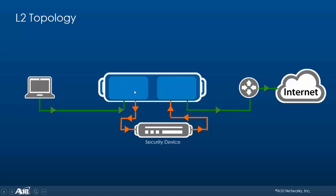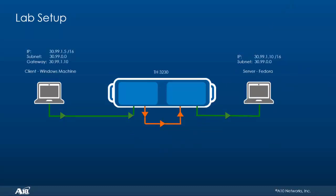Once the traffic is decrypted, it's sent out on the outbound interface towards the security device. Once the security device is done, the traffic will re-enter the A10 device, this time entering the outside partition on the inbound interface — that's the third interface. Here the traffic will be re-encrypted and sent out on the fourth and final interface, the egress interface. This interface carries SSL traffic towards the gateway router.